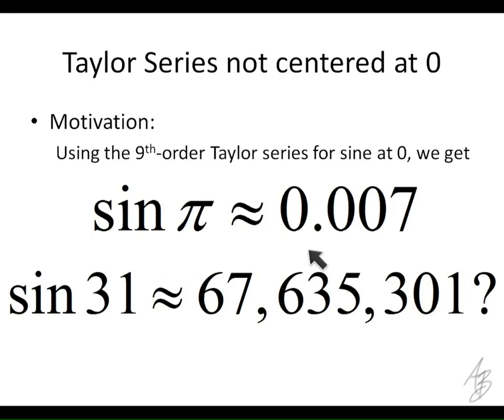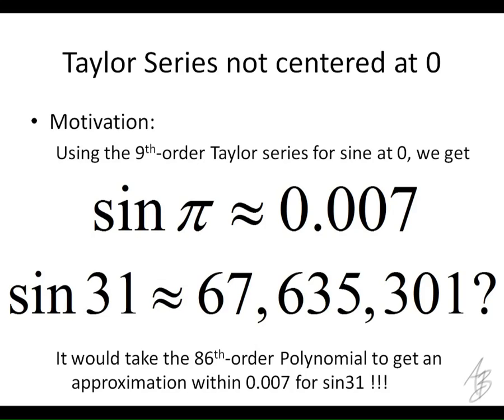So what can we do to make this more accurate? If I want it to be more accurate, I could add more terms. So I could add x to the eleventh over eleven factorial, minus x to the thirteenth over thirteen factorial. And that's going to work. But it's going to take 86 terms to get within the same accuracy we had at pi. So to get within 0.007 of the actual value of the sine of 31, it's going to take 86 terms. Does that seem very practical? Or we could do what Alec and Joe just suggested, and center it somewhere else.